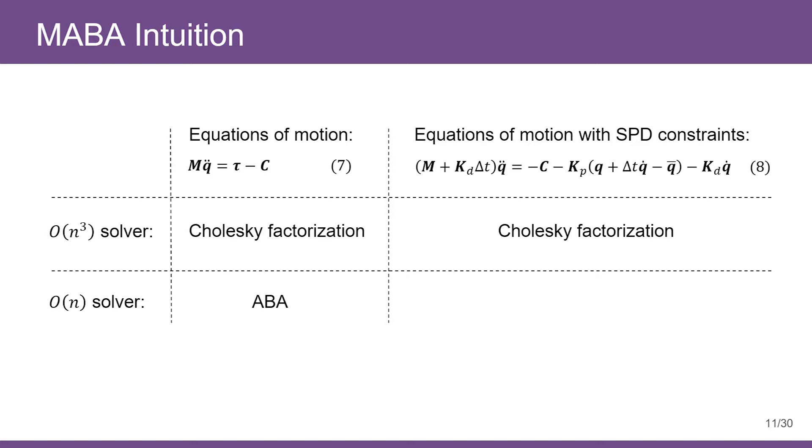When equations of motion is combined with SPD constraints, vanilla ABA is not going to work because of a different effective mass matrix, namely M + KD*Δt. However, it can be shown that if we re-derive ABA while taking SPD constraints into consideration, we can still achieve linear time complexity for SPD computation. The re-derived ABA is just our modified articulated body algorithm.